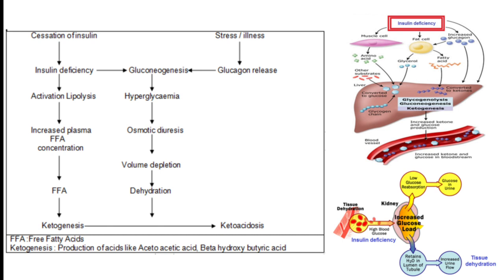The mechanism of DKA: cessation of insulin leads to insulin deficiency, which activates lipolysis for energy, increasing plasma free fatty acid concentration. Elevated FFAs increase ketogenesis in the blood, leading to ketosis. On the other side, stress and illness cause glucagon release and gluconeogenesis, leading to hyperglycemia, then osmotic diuresis. Because of high blood sugar, the patient can lose a large volume through osmotic diuresis, resulting in severe volume depletion, dehydration, hypotension, and shock, all contributing to ketoacidosis.